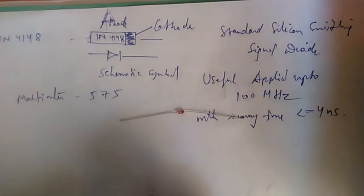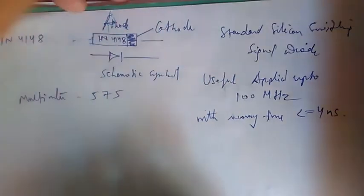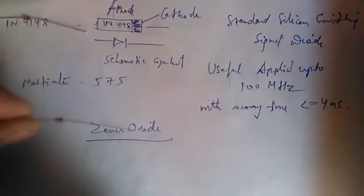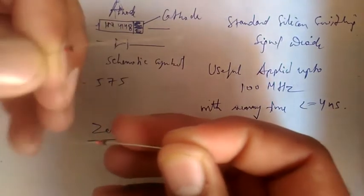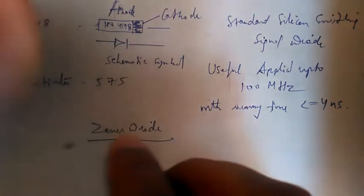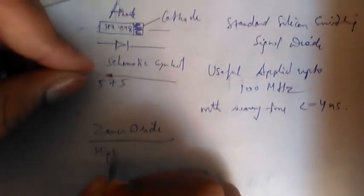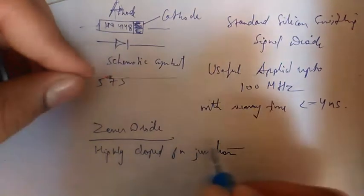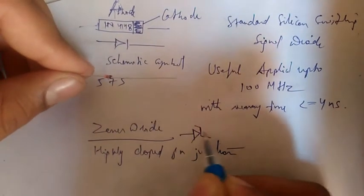This was about the standard silicon switching signal diode. Now, one more diode looks like this — this one is a Zener diode. Both the Zener diode and the signal diode are 4148 and both look the same. In a Zener diode, it is a very highly doped PN junction.